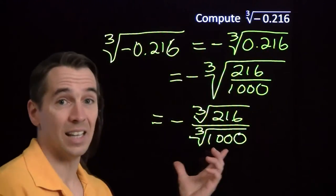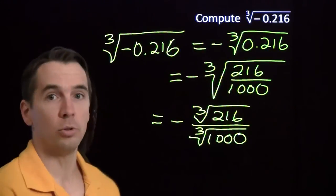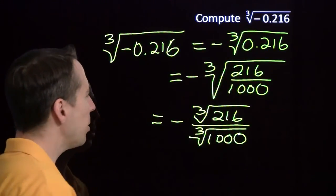The cube root of 1,000, that's easy. 1,000 is 10 cubed, so the cube root of 10 cubed, that's just 10. But what about 216?